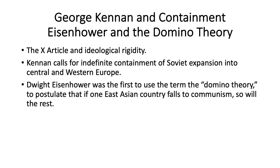Dwight Eisenhower was the first to use the term 'domino theory,' which postulated that if one East Asian country falls to communism, so will the rest. So while Kennan focused on Europe, Eisenhower focused on Asia. You can see how eventually from this idea the U.S. escalated into actual military involvement in Vietnam — under Kennedy with special forces, and then a full-scale war under Lyndon Johnson starting in 1964. The idea was to contain the spread of communism in Vietnam, to limit communism to North Vietnam, because if South Vietnam fell, then other Southeast Asian countries would fall to communism. That's the essence of the domino theory.